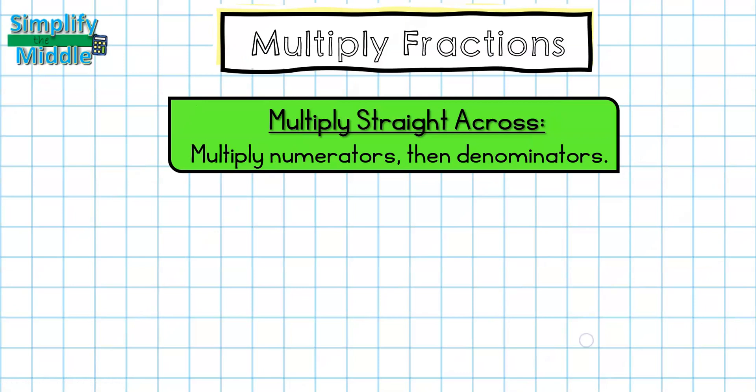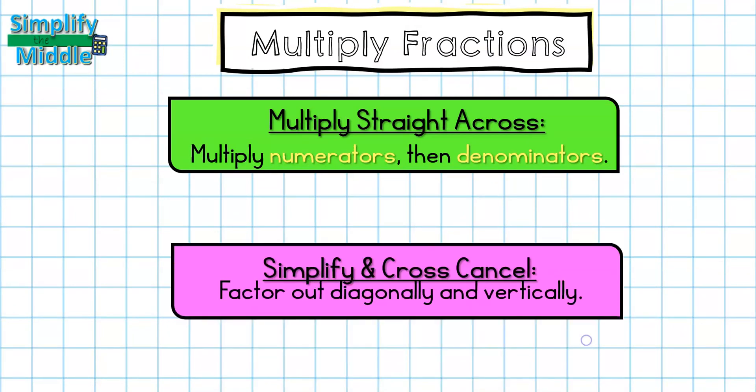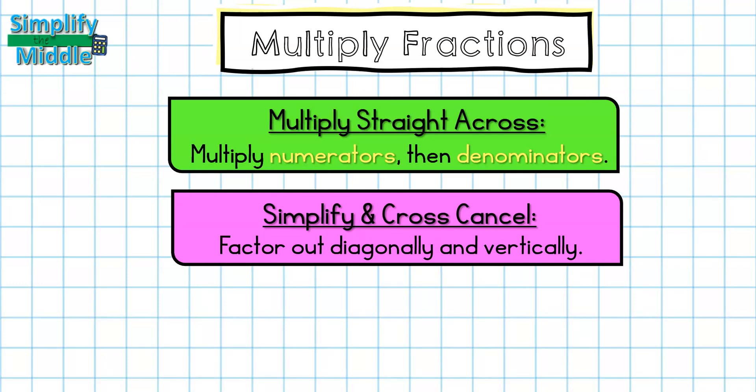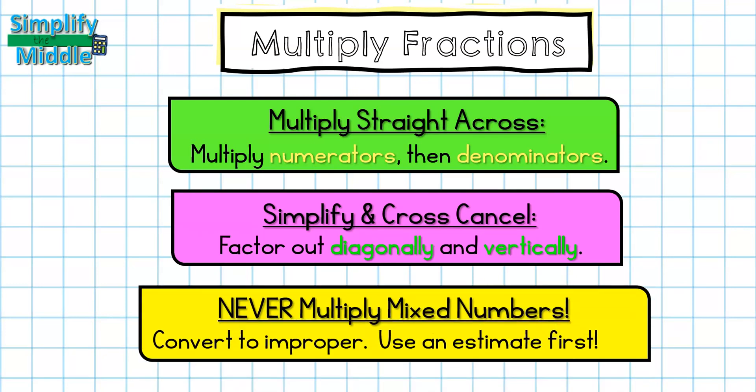So remember, if you're multiplying straight across, you'll multiply numerators then denominators. For simplifying and cross canceling, you'll factor out diagonally and vertically. And you never multiply mixed numbers. Always convert to improper and use an estimate first.